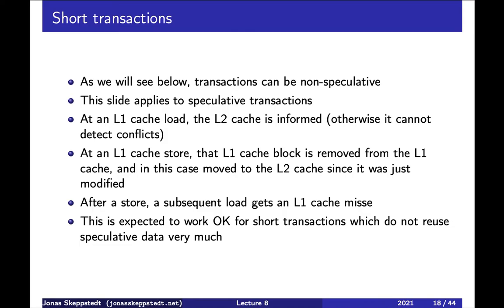A transaction is usually speculative, but it can be forced to be non-speculative if it must succeed. In that case, other transactions that conflict are the ones which will be aborted instead. So how are short-running transactions implemented?